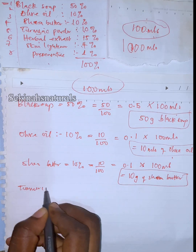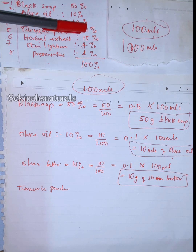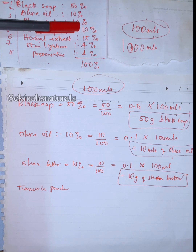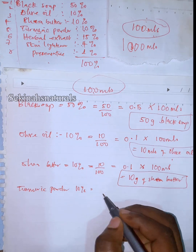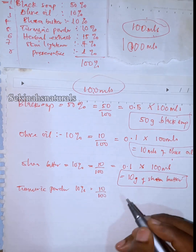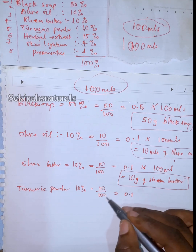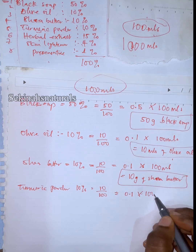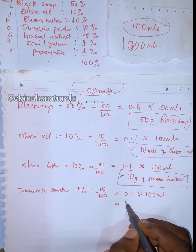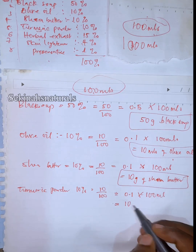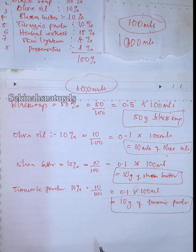For turmeric powder, the recipe calls for 10% turmeric powder. That is 10 over 100, which equals 0.1, times 100 — the total amount of black soap to be produced — and that gives us 10 grams of turmeric powder. Now let's calculate our herbal extract.